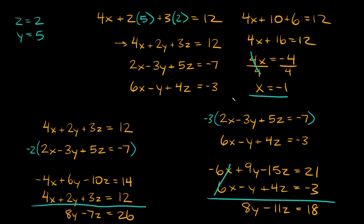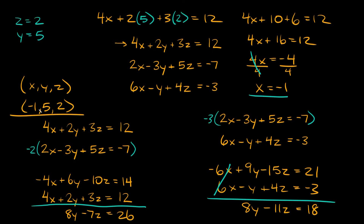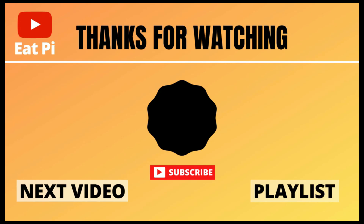We got all three variables! If you wanted to write your answer as an ordered triple — basically like a coordinate point in three dimensions — it would just be (x, y, z). In this case, x is negative 1, y is 5, and z is 2, so the ordered triple is (−1, 5, 2). If you found the video helpful, definitely leave a thumbs up below, and if you have any other questions or want to see other examples, let me know in the comments.